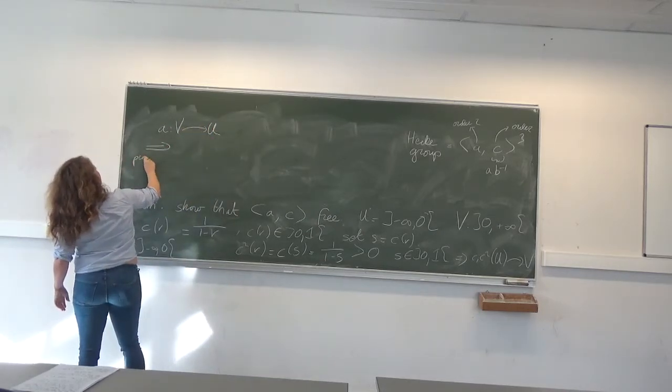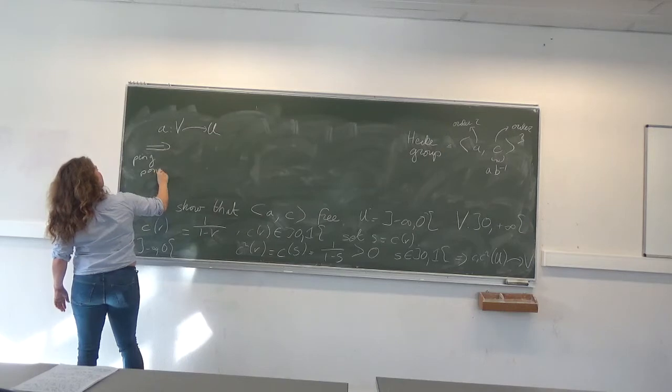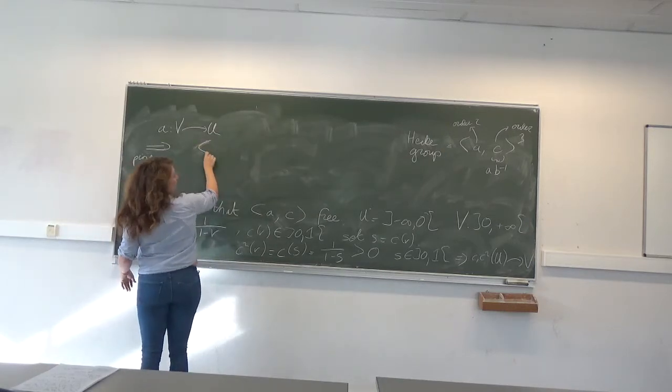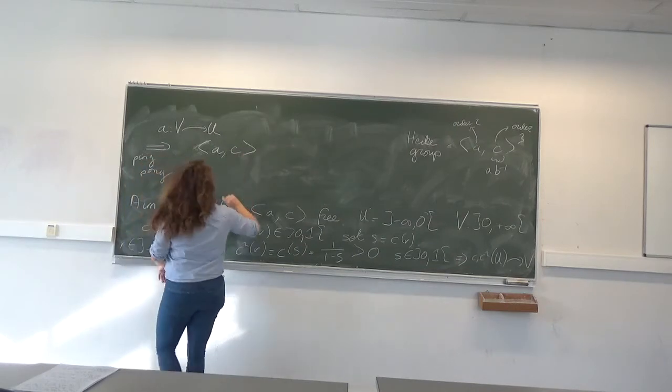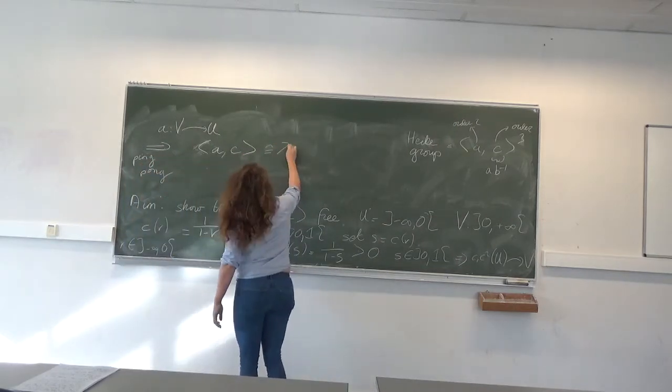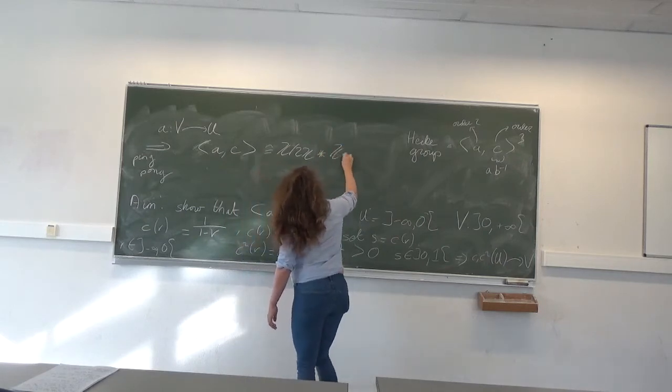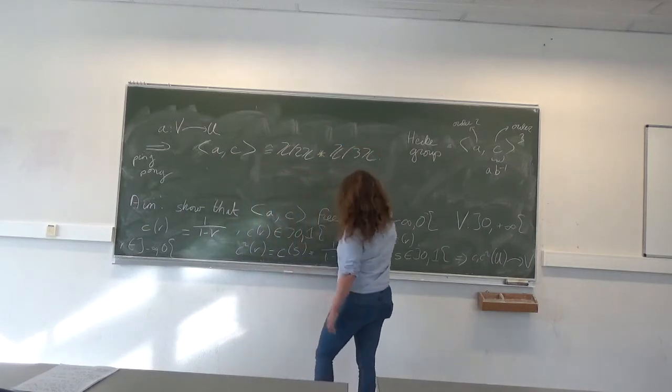And so by the ping-pong lemma, I have that the Hecke group, the group generated by a and c, is just the free product Z/2Z * Z/3Z.